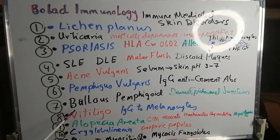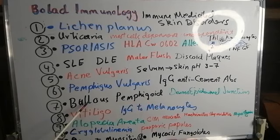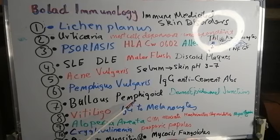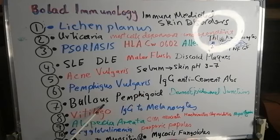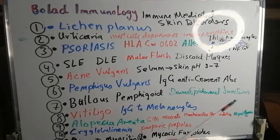In the case of bullous pemphigoid, the immune complexes act at the junction between the epidermis and dermis, with subsequent separation of the epidermis from the dermis. The resultant space is filled with plasma. This is due to immune complex deposition at the dermo-epidermal junction.